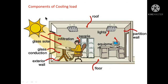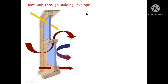In this figure we can see the various components of cooling load. Heat is entering due to sunlight through the glass windows by conduction and radiation. Heat is also entering through the exterior wall, through the roof, through the floor, through the equipment, through the partition wall, through the lights and equipment inside the space, through the people, and heat is also entering through infiltration.